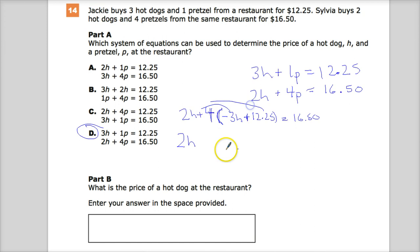Then I'm going to distribute, of course. Negative 12h plus 49 equals 16.50. My like terms are here, so it's negative 10h.